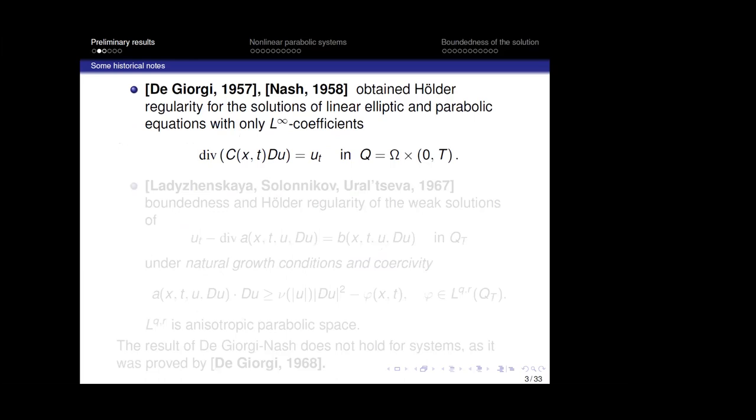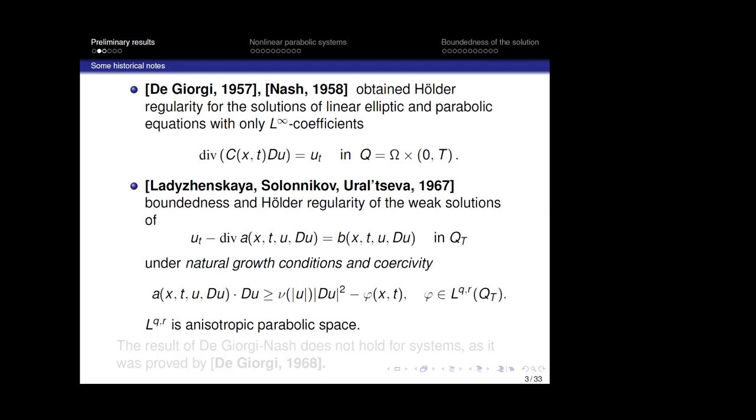Among these, we remember De Giorgi and Nash, who obtained Hölder regularity for solutions of linear elliptic and parabolic equations with only L-infinity coefficients. Ladyzhenskaya, Solonnikov, and Ural'tseva studied and obtained boundedness and Hölder regularity of weak solutions of equations under natural growth conditions and coercitivity conditions. The results of De Giorgi and Nash hold for systems as well, as proved by De Giorgi in 1968.